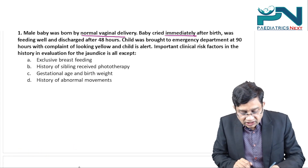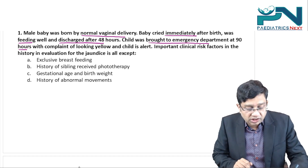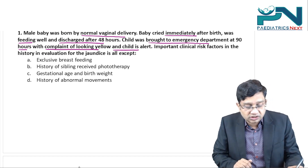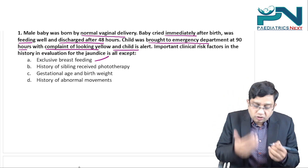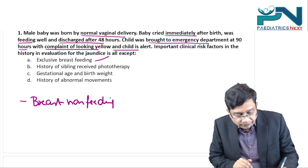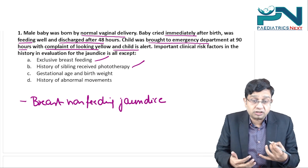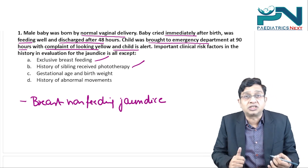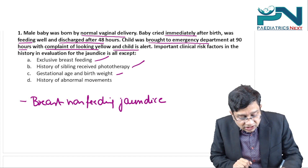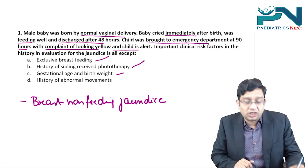Question one: A male baby born by normal vaginal delivery cried immediately after birth, was feeding well, discharged after 48 hours, and brought to the emergency department at 90 hours (day 4) looking yellow. The child is alert. Important clinical risk factors in the history include: exclusive breastfeeding (breast non-feeding jaundice or breastfeeding failure jaundice in the first week), history of sibling receiving phototherapy (suggesting genetic disorders like hereditary spherocytosis, G6PD deficiency, or pyruvate kinase deficiency), and gestational age and birth weight — the less the age, the more the chances of neonatal jaundice.